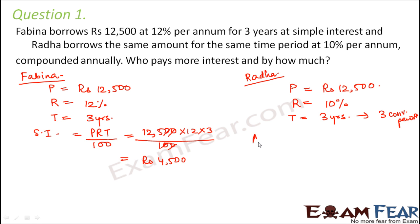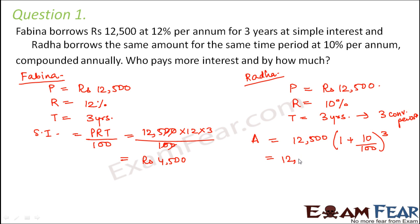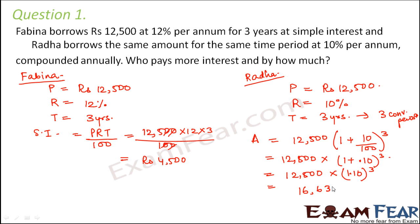Making use of that, let us find the amount at the end of three years. Amount = P × (1 + R/100)^N = 12,500 × (1 + 0.10)^3 = 12,500 × (1.10)^3 = rupees 16,637.50. So this is the amount that we will get at the end of three years.